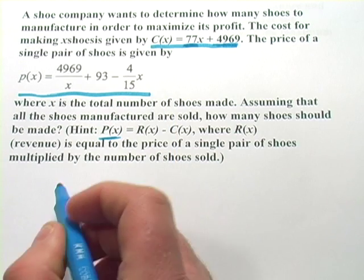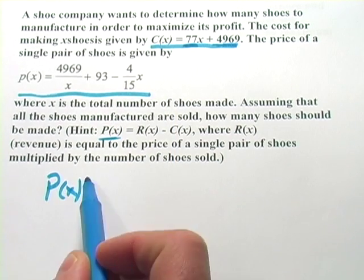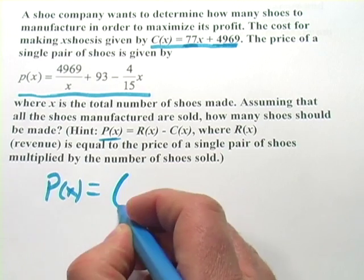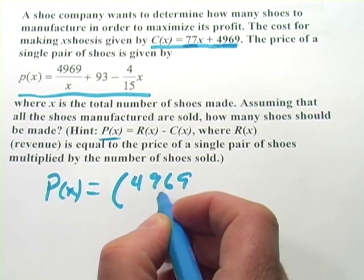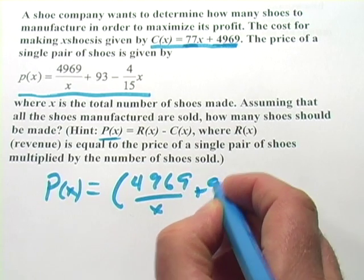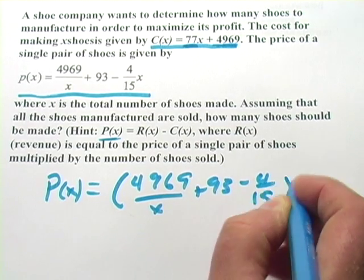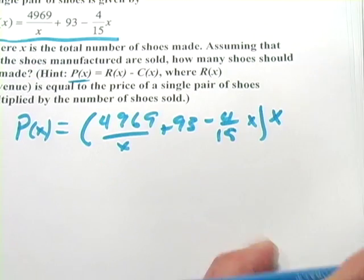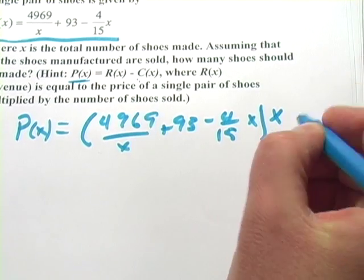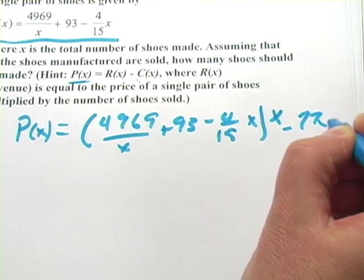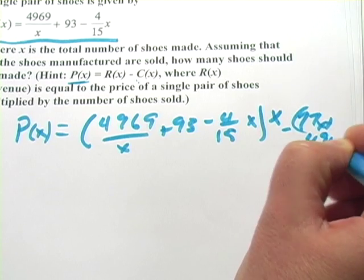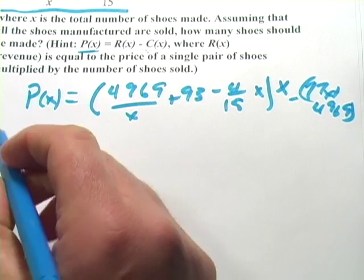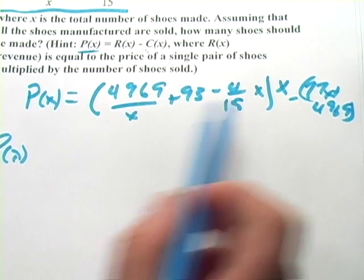So let me show you how this works. Our profit function equals the revenue function and the revenue function is P of x, the price of a pair of shoes, so 4969 over x plus 93 minus 4 fifteenths x times the number of shoes you make, which is x. X is the number of shoes being produced here. So that's and then minus the cost function which is minus 77x plus 4969. Okay, a little hard to see there. I'll simplify this and write that a little more clearly.